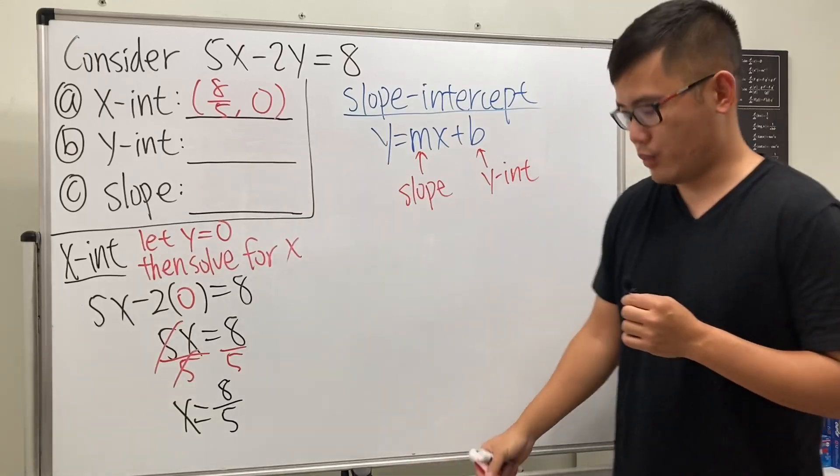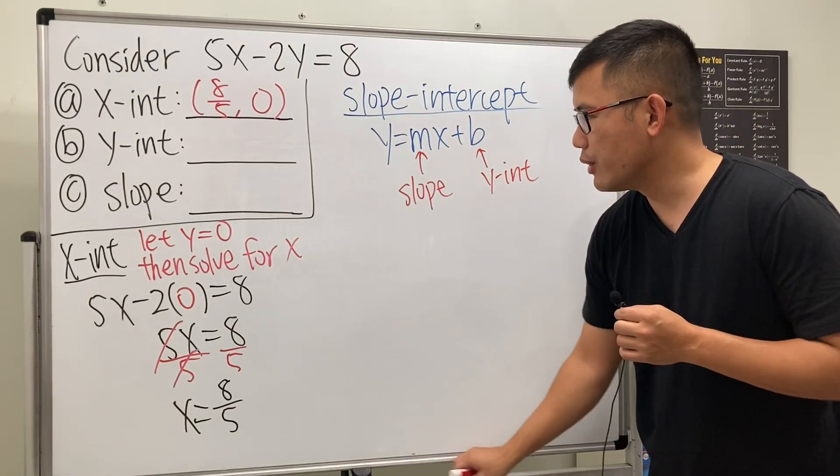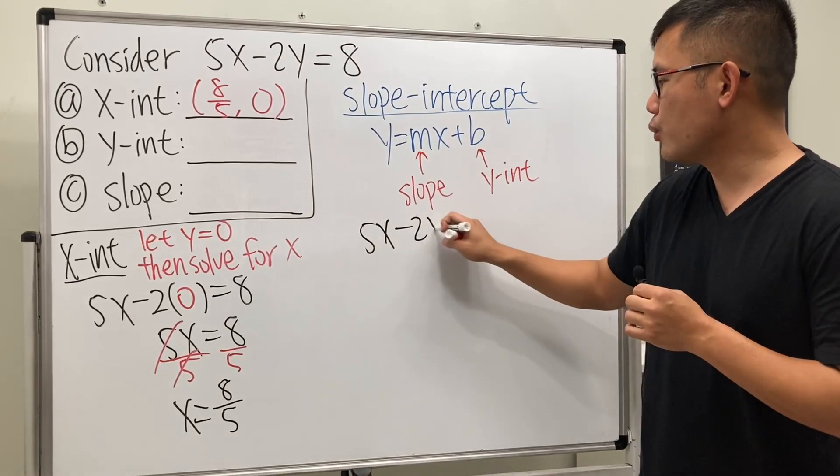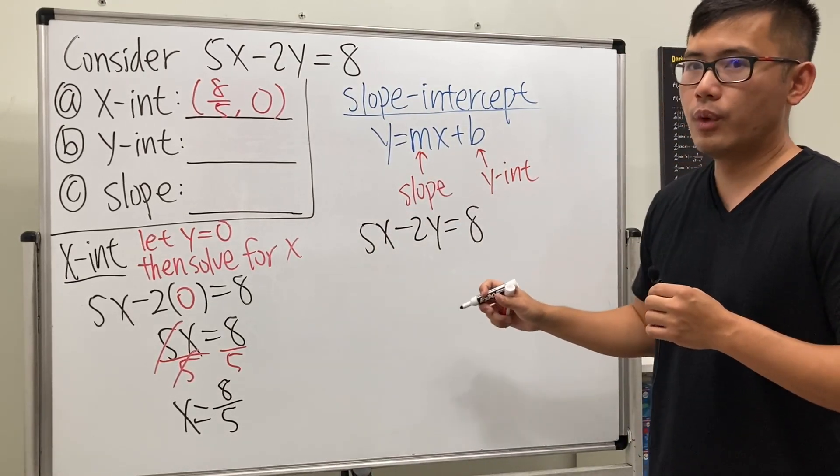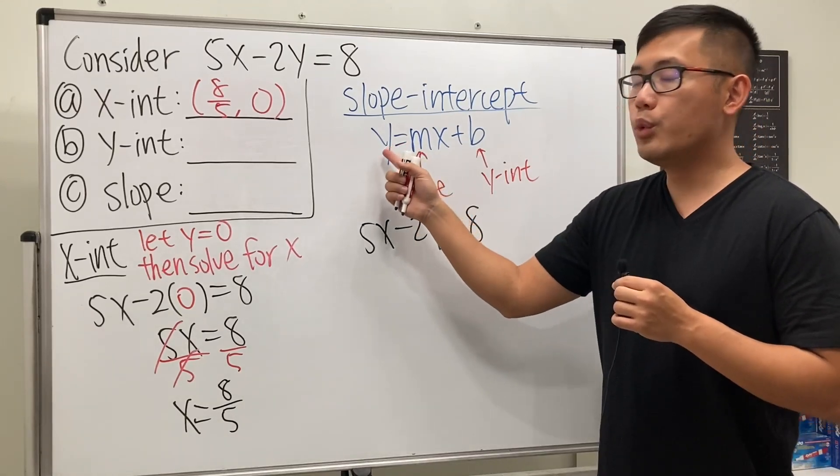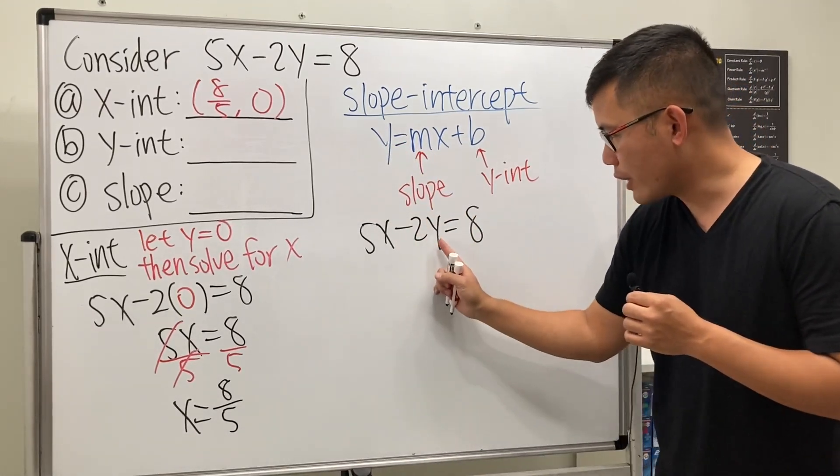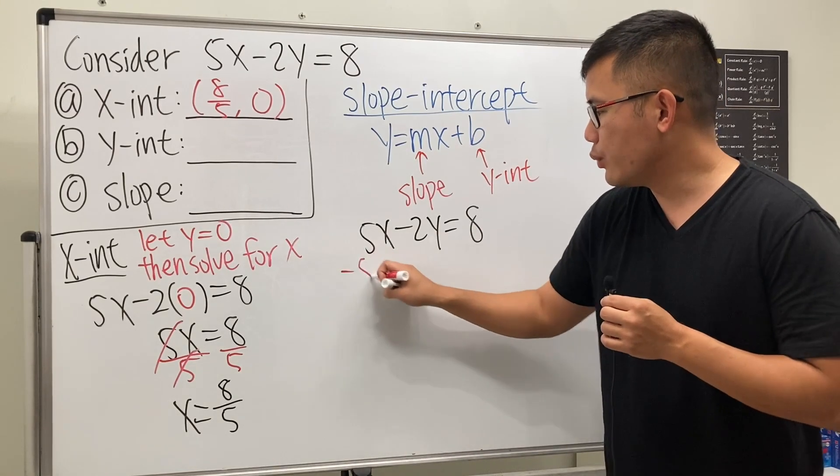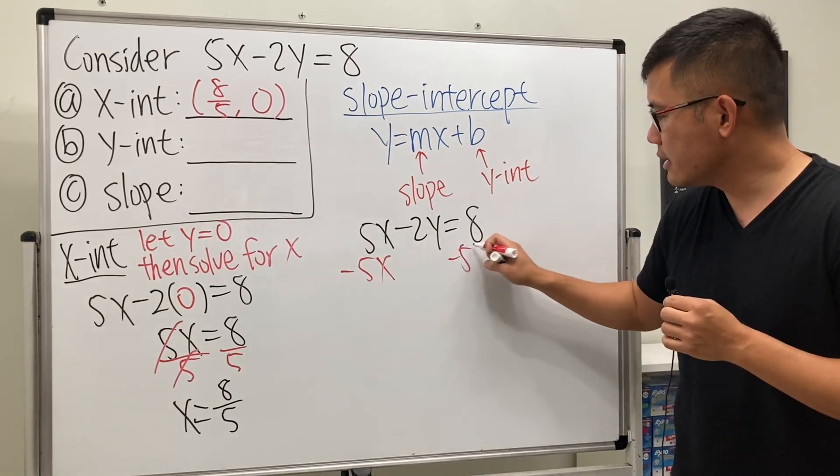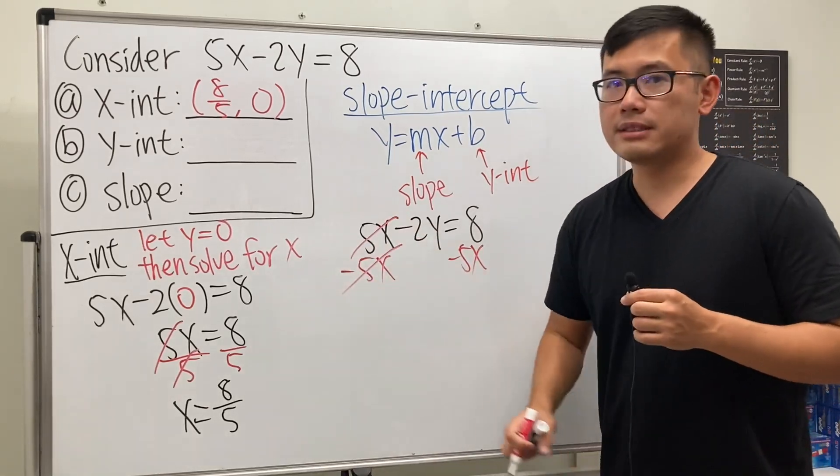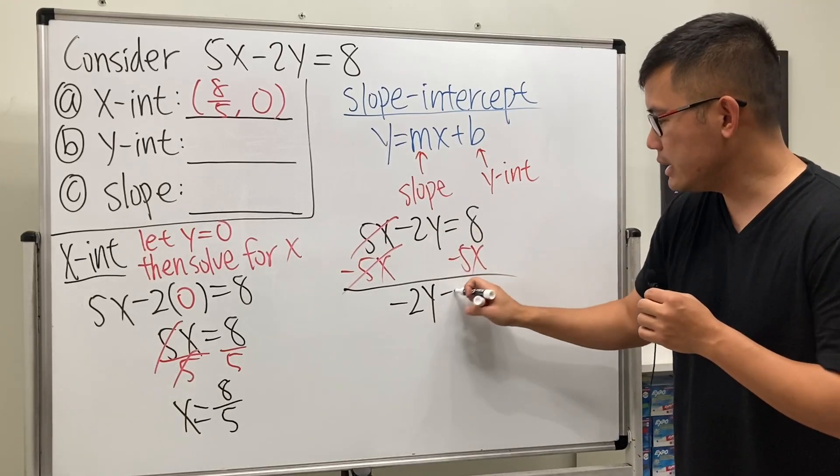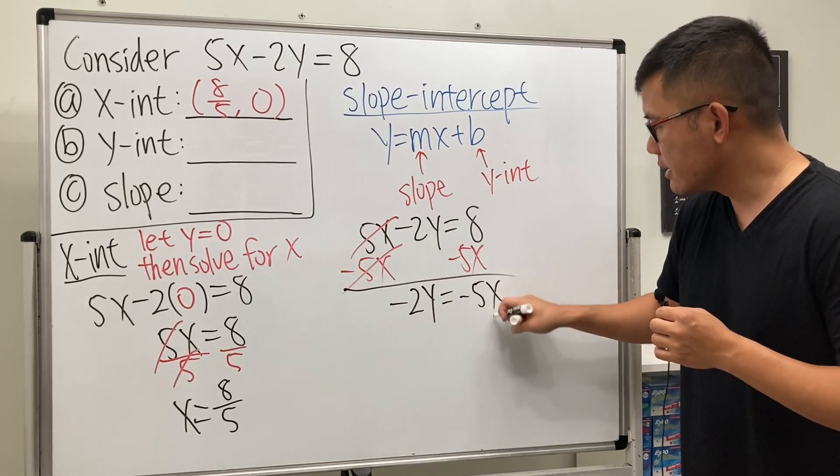If we can write this equation in this form, we'll be able to answer parts b and c right away. Looking at 5x - 2y = 8 again, to get to slope-intercept form, we need to isolate y. That means moving 5x to the other side by subtracting 5x from both sides.